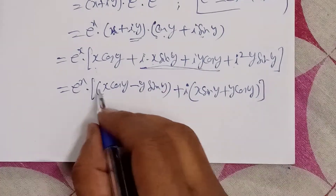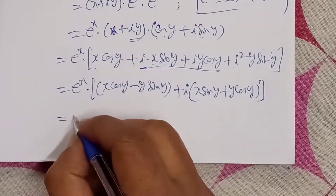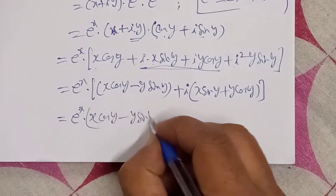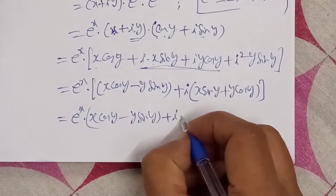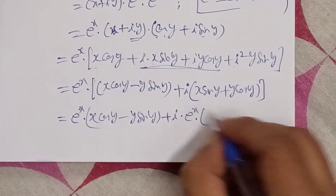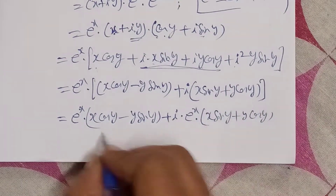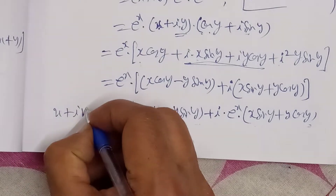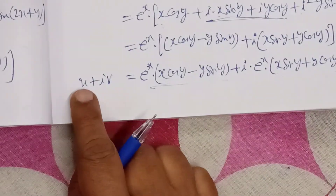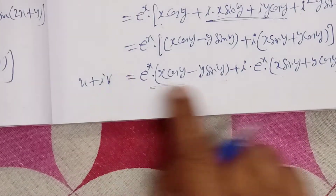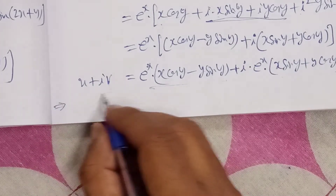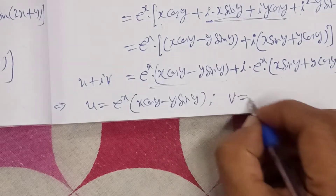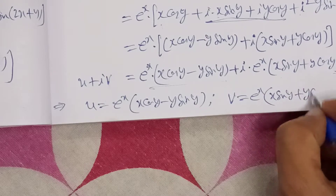Now multiplying e^x through both terms, we fully separate the real and imaginary parts. We obtain: u = e^x(x·cos y − y·sin y) and v = e^x(x·sin y + y·cos y).